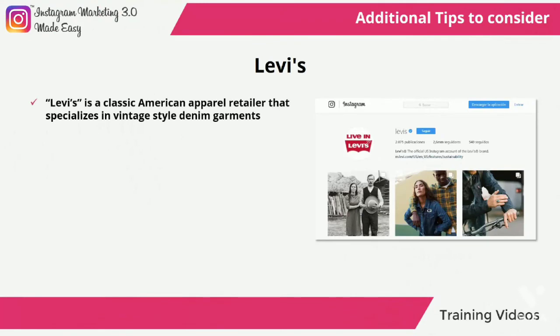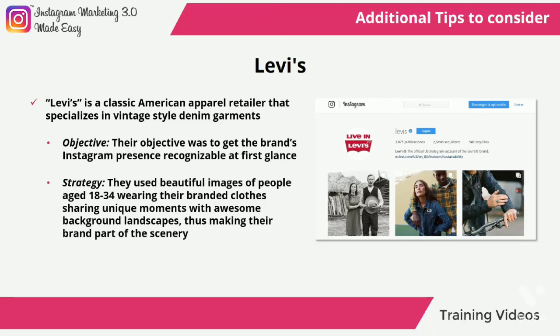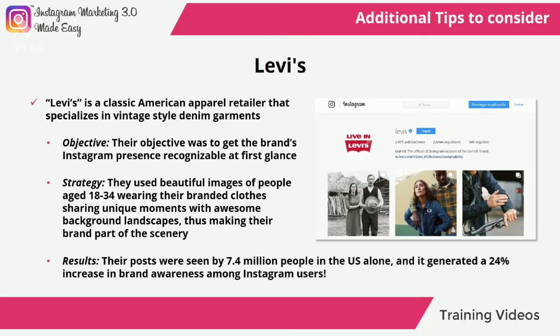Levi's — a classic American apparel retailer that specializes in vintage-style denim garments. Their objective was to get the brand's Instagram presence recognizable at first glance. They used beautiful images of people aged 18 to 34 wearing their branded clothes, sharing unique moments with awesome background landscapes, thus making their brand part of the scenery. Results: their posts were seen by 7.4 million people in the U.S. alone, and it generated a 24% increase in brand awareness among Instagram users.